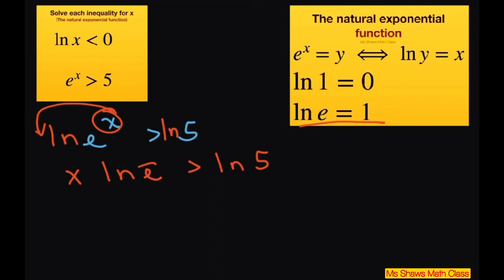Alright, so that's just 1. So x is greater than ln of 5. And since that's greater than 0, remember our domain for ln of x, our x has to be positive. But ln of 5 is already positive. So this is your solution.